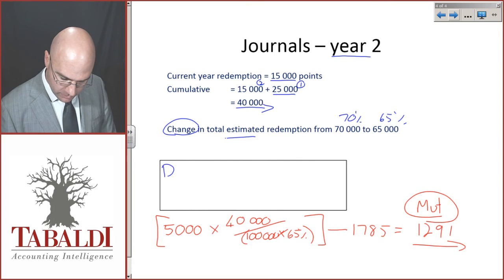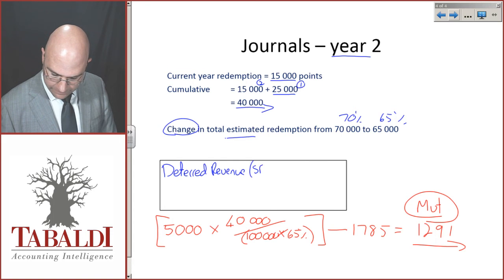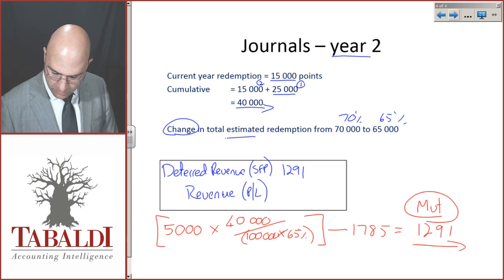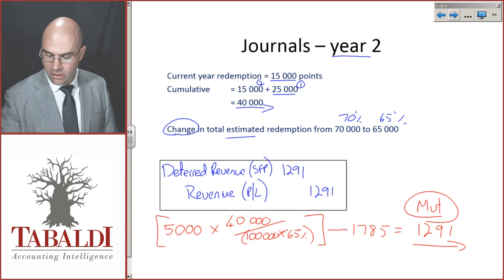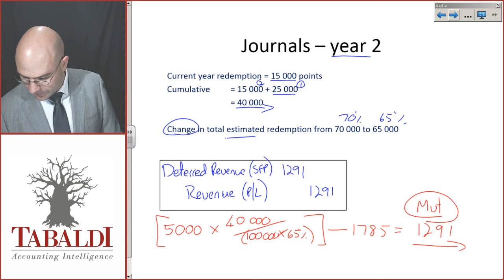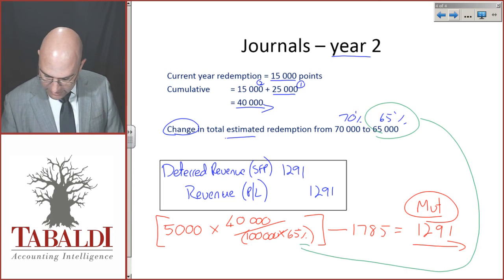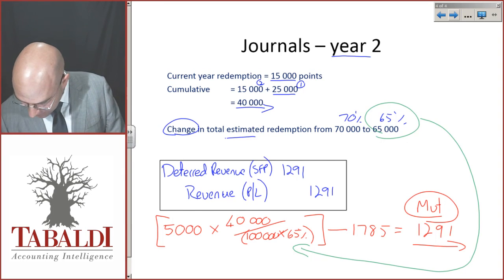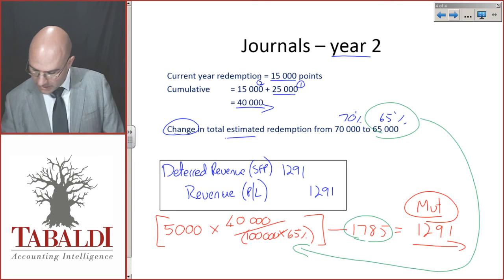So, here I'm going to debit deferred revenue, making the liability smaller by 1,291, and credit revenue in profit or loss, recognizing the revenue of 1,291. Take note, I've now brought in the new change in estimate in this year's closing cumulative balance.